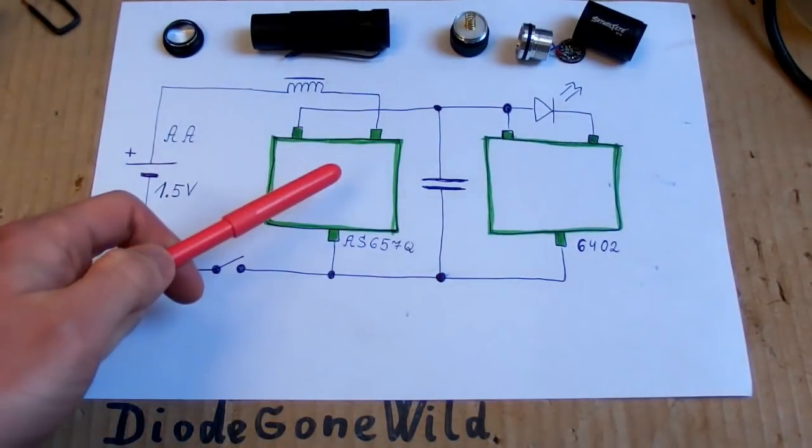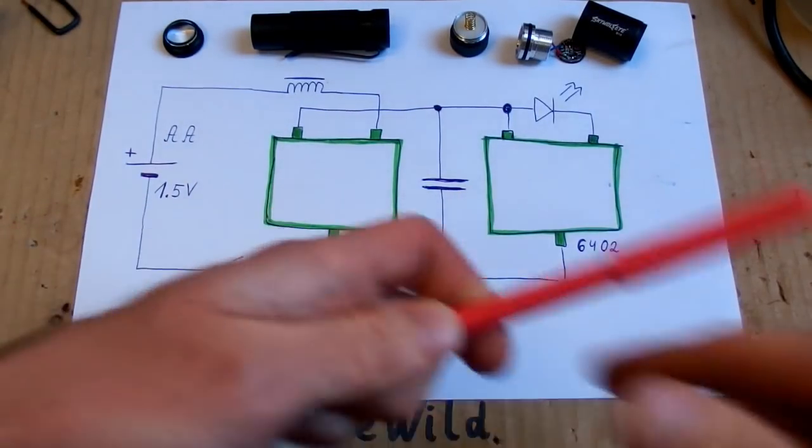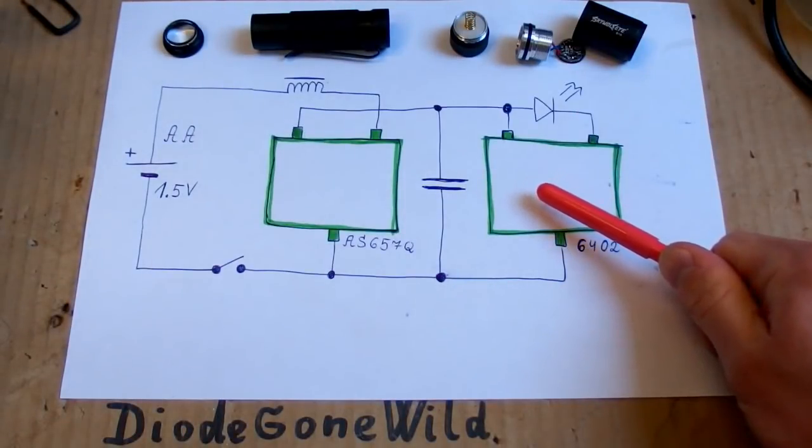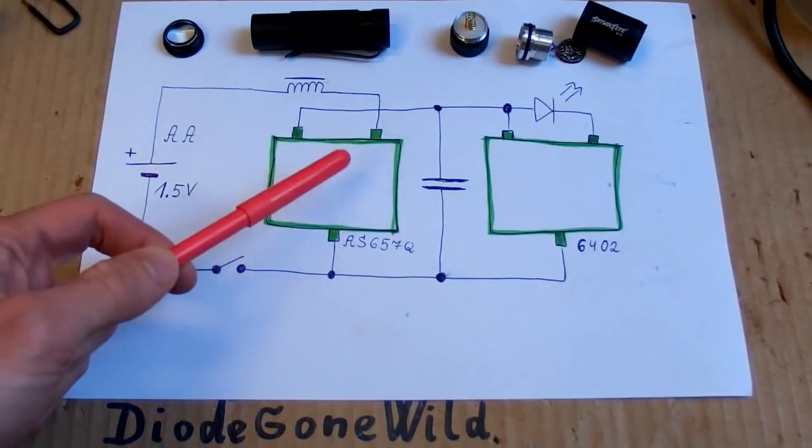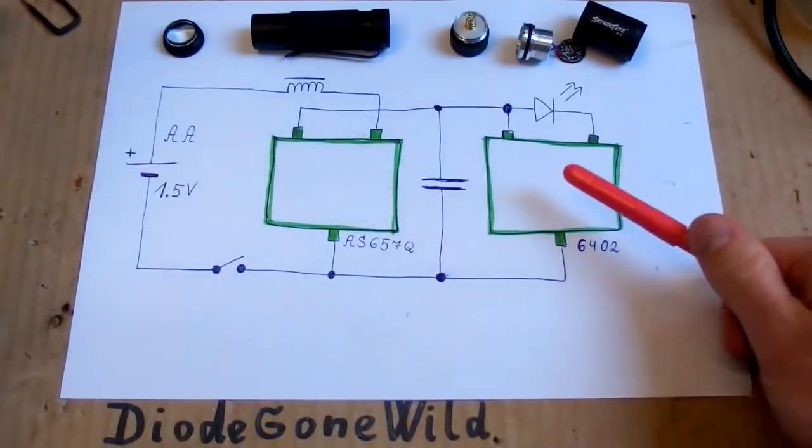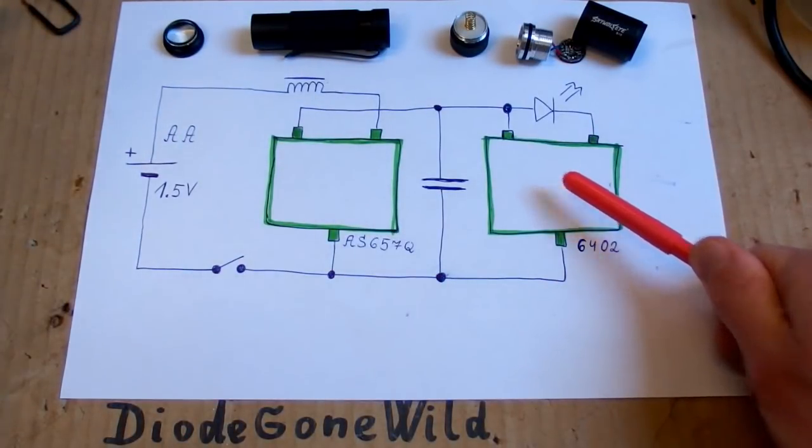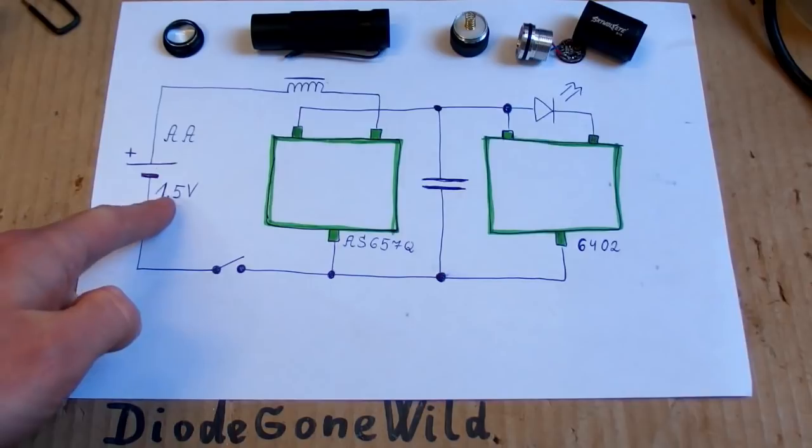This chip seems to be a boost converter, and this chip is the mode controller controlling the three modes. In this case the boost inverter comes first, and then there is the mode controller. This is probably because it's a very low voltage, just 1.5 volts, so the voltage has to be boosted before it goes into the mode controller.